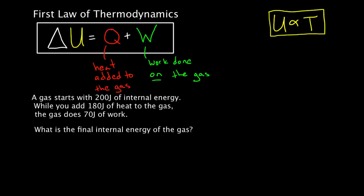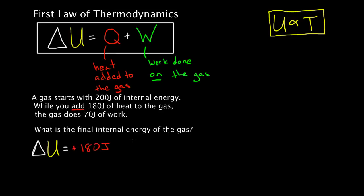Let's try another one. A gas started with 200 joules of internal energy, and while you add 180 joules of heat to the gas, the gas does 70 joules of work. What is the final internal energy of the gas? The change in internal energy equals Q plus W. The 180 joules of heat is added to the system, so that's positive 180 joules.